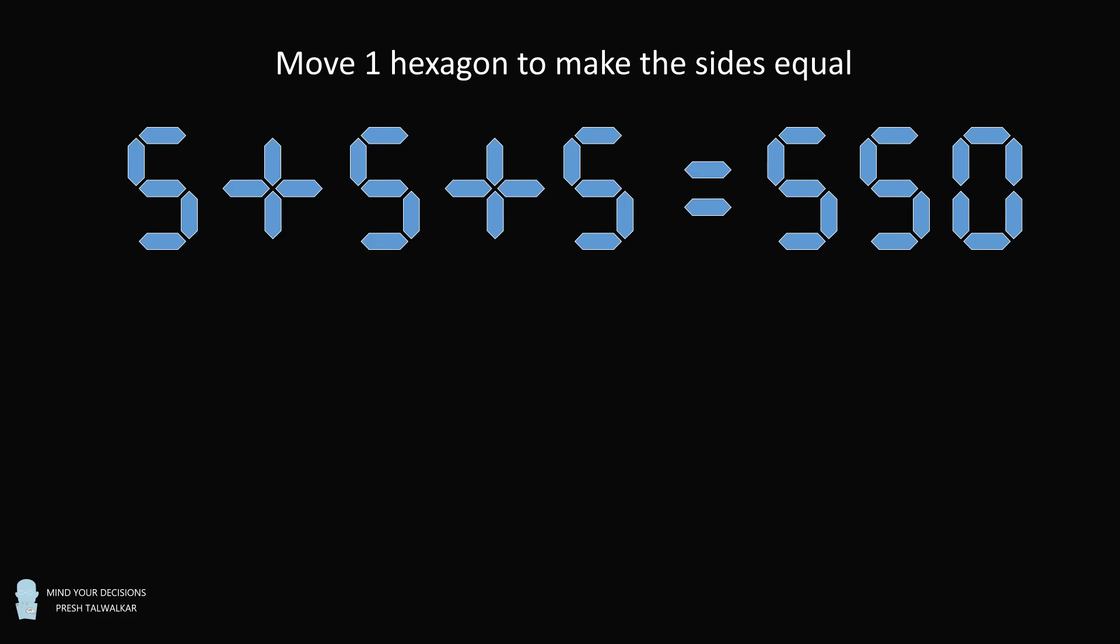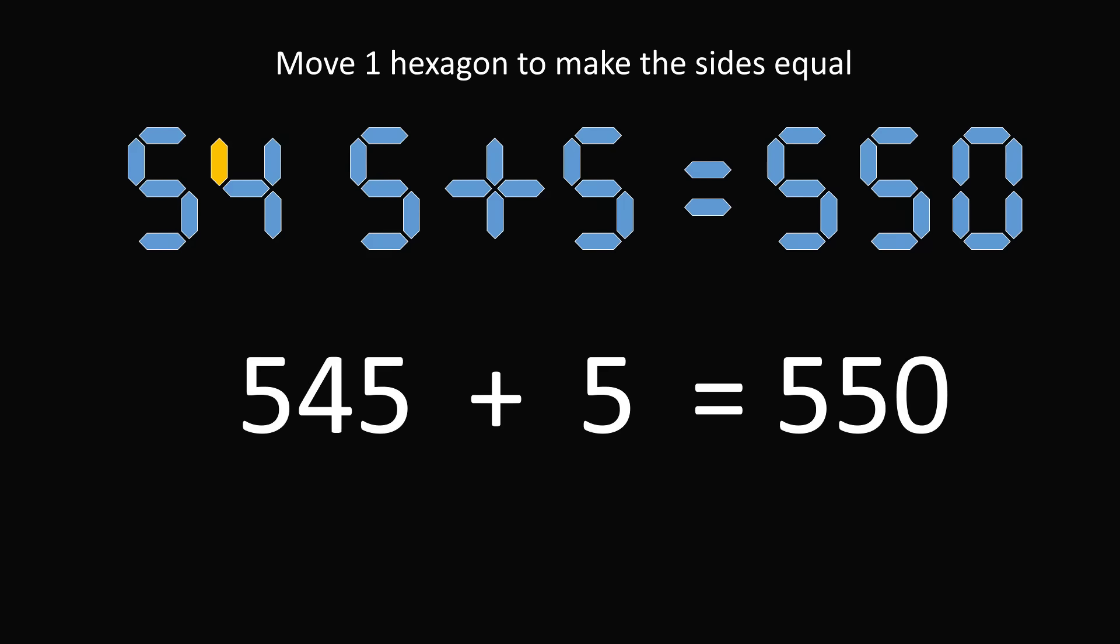So, here's the answer. Take one of the hexagons from a plus sign and rearrange it to be the number 4. We now have an equation that reads 545 plus 5 is equal to 550.